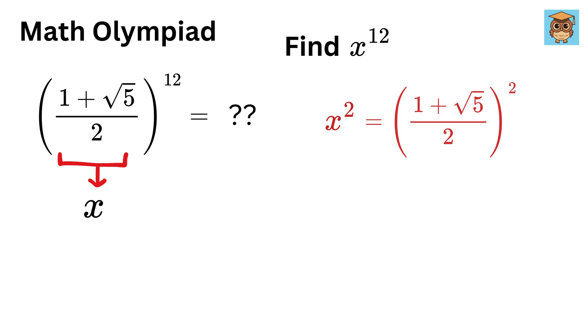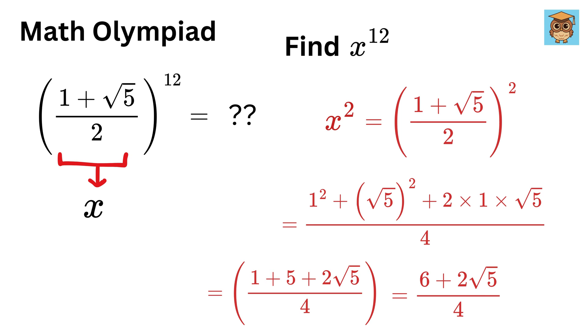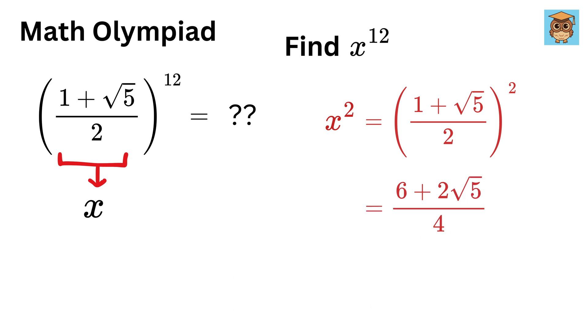It will be (1+√5)/2 squared. The numerator will be 1² + (√5)² + 2(1)(√5) and the denominator will be 4. So the numerator will be 1+5+2√5, or 6+2√5. On simplifying by taking 2 common and canceling it,